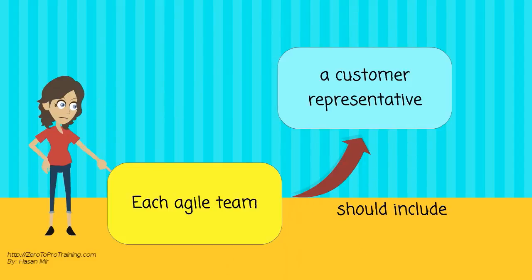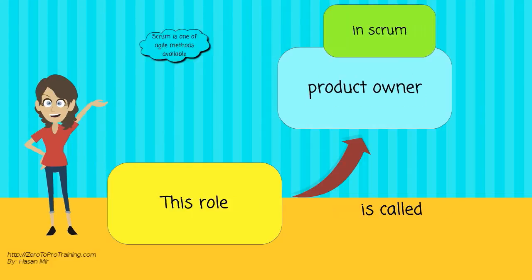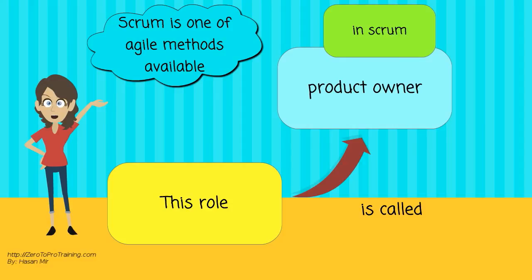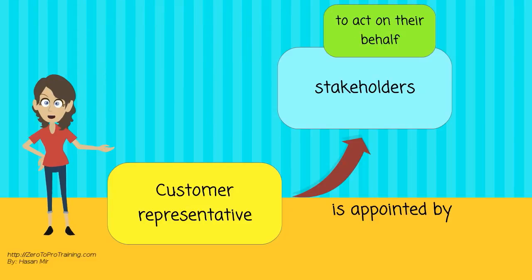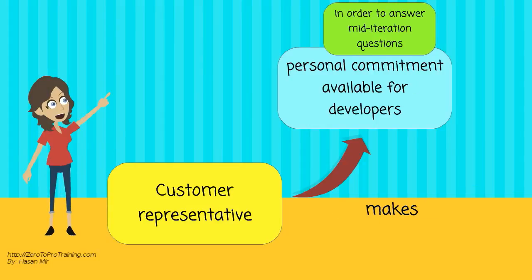No matter what development disciplines are required, each Agile team should include a customer representative. This role is called Product Owner if you are using Scrum, which is one of the Agile methods available. This person is appointed by stakeholders to act on their behalf and makes their personal commitment available for developers in order to answer mid-iteration questions.